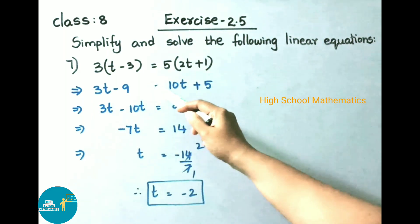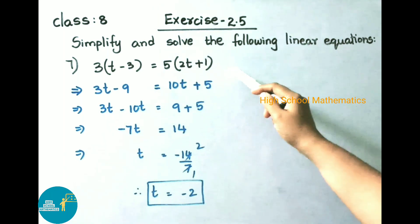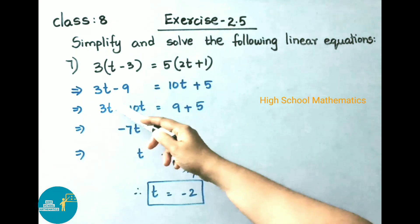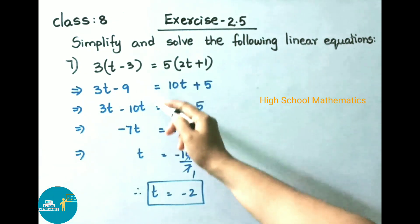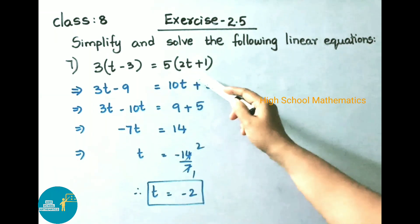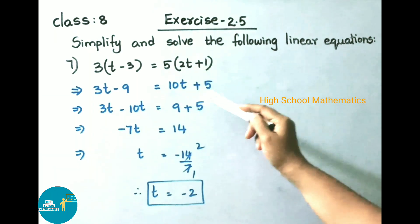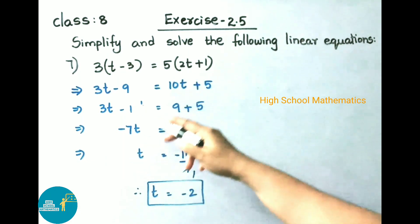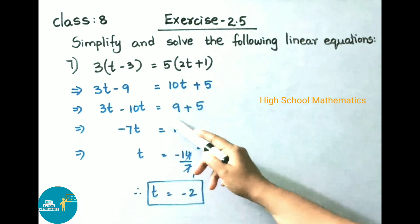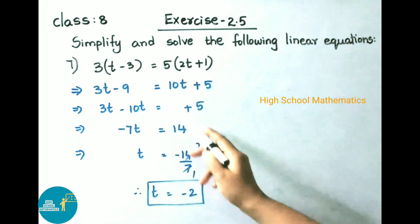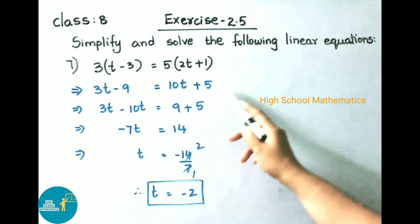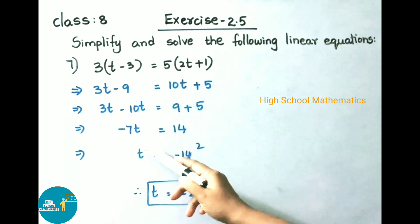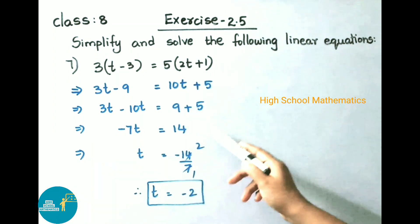3 into (t minus 3) equals 5 into (2t plus 1). That implies, multiplying out: 3t minus 9 equals 10t plus 5. Now transposing: 3t minus 10t equals minus 9 plus 5 becomes 3t minus 10t, that is minus 7t, equals 9 plus 5, which is 14.